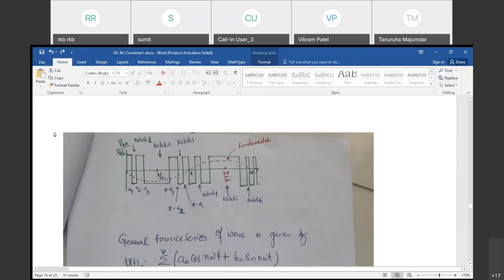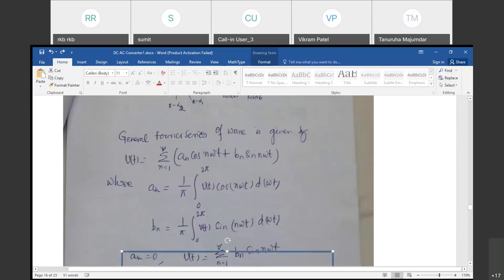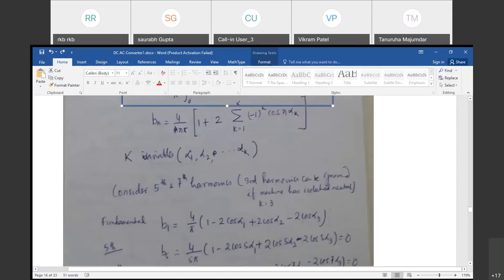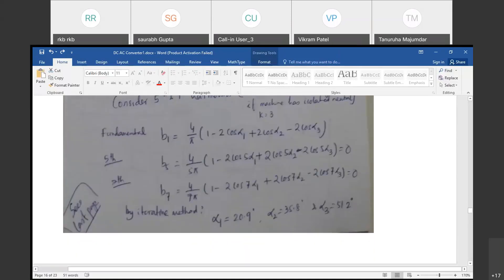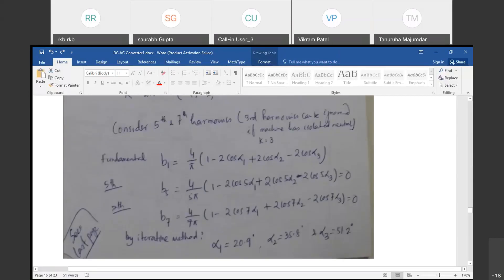α1 is calculated from this place. α1 is 20.9°, α2 is 35.8°. These notches are created according to the calculated values. And then, you will see that in the output, the fifth and seventh harmonics will be absent.